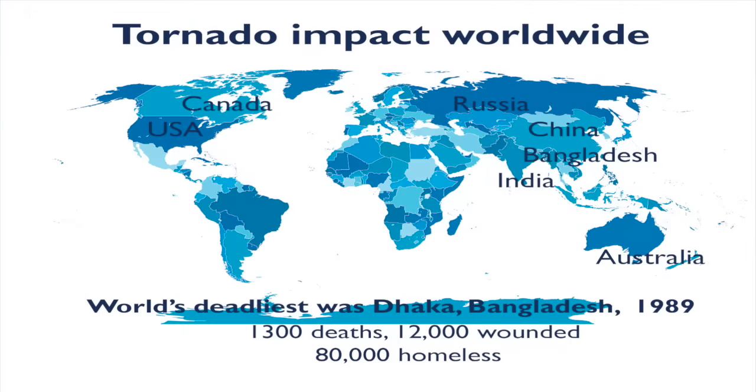Tornado impact worldwide: United States, of course, number one nation with the most tornadoes, mostly due to the geography and the weather systems that occur with these mixtures of warm fronts and cold fronts over a large continental area. We also see tornado impact in Canada, Russia, Australia, China, and amazingly, Bangladesh. Bangladesh has many of the most severe tornadoes in world's history. The world's deadliest tornado killed 1,300 people and wounded nearly 12,000 people. This occurred in 1989 in Bangladesh.